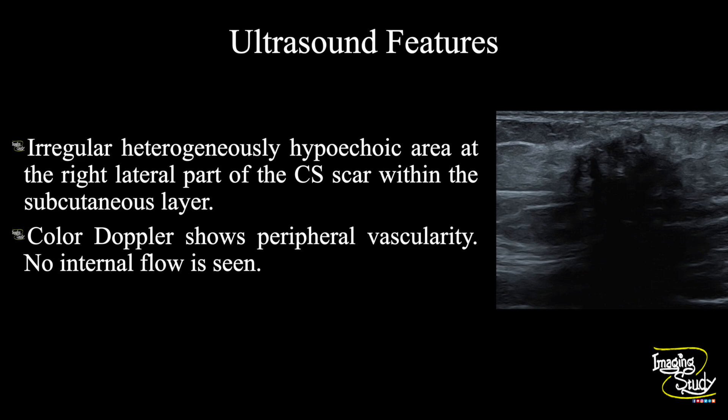So in summary, an irregular heterogeneously hypoechoic area with some internal echogenic components is seen at the right lateral part of the caesarean section scar, confined within the subcutaneous layer. Color Doppler shows only some peripheral vascularity. So these features are concluded as a case of caesarean section scar endometriosis.